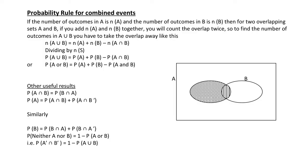If we look at our probability rule for combined events: if you have A union B, the probability of A union B is equal to the probability of A plus the probability of B minus the intersection, so minus the overlap — probability of A and B. The whole probability of A — the whole circle of A — is equal to the probability of A and B, plus the probability of A and not B. Another way we could write this: this bit is the probability of A only, so it's only A, with no B involved.